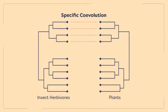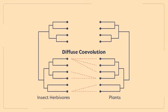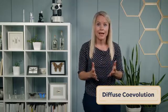In contrast to specific coevolution, reciprocal adaptations can also evolve among multiple interacting species. This is known as diffuse coevolution. These interactions may not be limited to a single lineage of plants, but can involve multiple interacting groups of plants and insects.